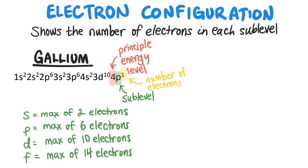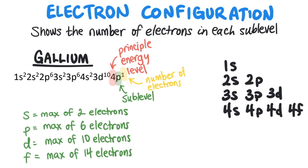So on the first principal energy level there is only an S sublevel. On the second principal energy level there is an S and a P sublevel. On the third there is an S, P, and D. And on the fourth there is an S, P, D, and F. We could keep going but for this question we only need to go to the fourth principal energy level.